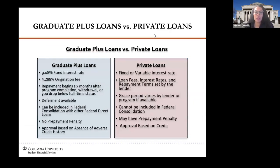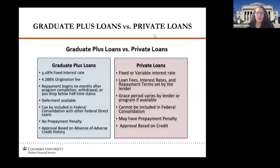The main differences between the graduate plus loan and private loans are the interest rates and origination fees. When you borrow federally, everything is already stipulated — you know it's going to be a fixed interest rate and fixed origination fee, and there are already repayment plans that exist after you graduate. With private loans, you really have to understand the terms and conditions because rates can be variable. The grace periods can also vary, whereas with federal loans the grace period stays the same — you go into repayment six months after you graduate, are no longer enrolled more than half-time, or withdraw from the program.